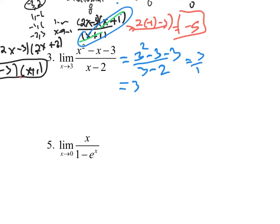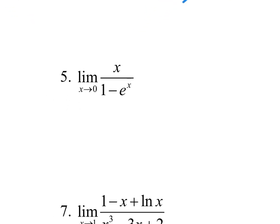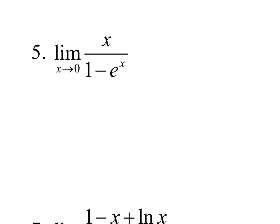Let's do the next one — number 5. Plugging in zero right off the bat. I get zero on top. On the bottom, I get 1 minus e to the zero. If you have zero on top and a number on the bottom, that's just zero. If zero's on the bottom and a constant's on top, you get infinity or negative infinity.